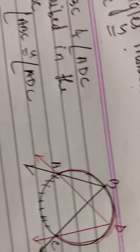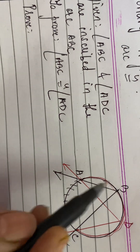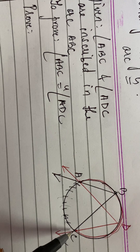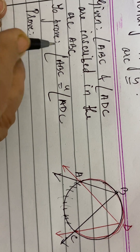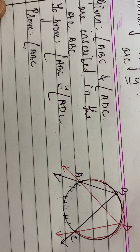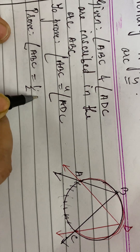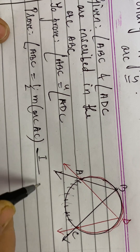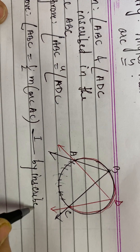The proof is very simple. If you look at angle A, B, C — angle A, B, C is intercepting arc A, C. Today we studied the inscribed angle theorem: the measure of the inscribed angle is half of the measure of the intercepted arc. So angle A, B, C is half of the measure of arc A, C. The reason is the inscribed angle theorem. This is equation one.